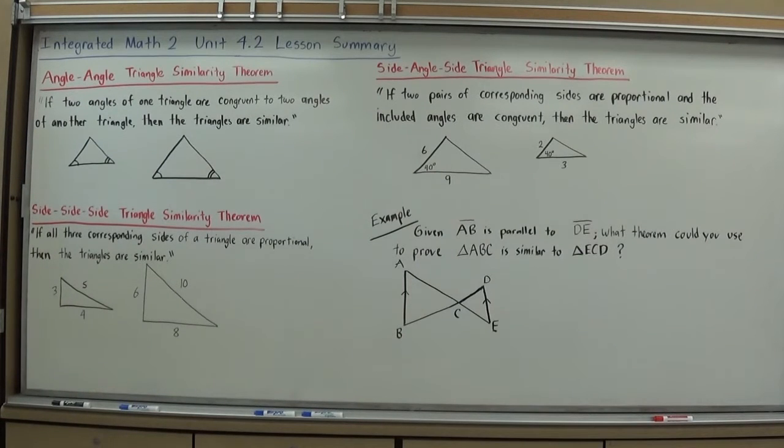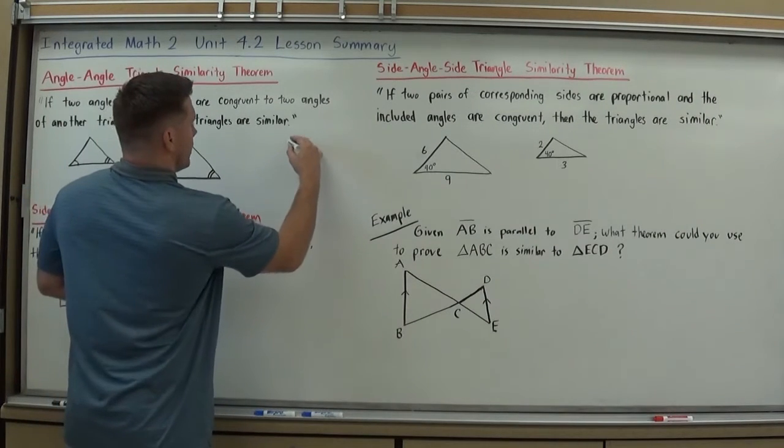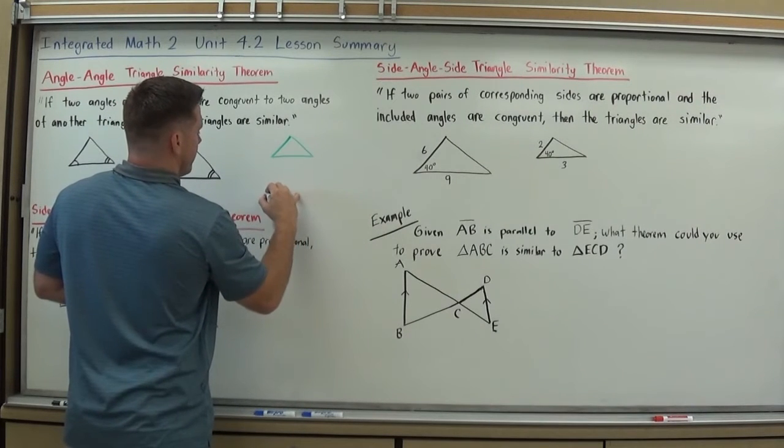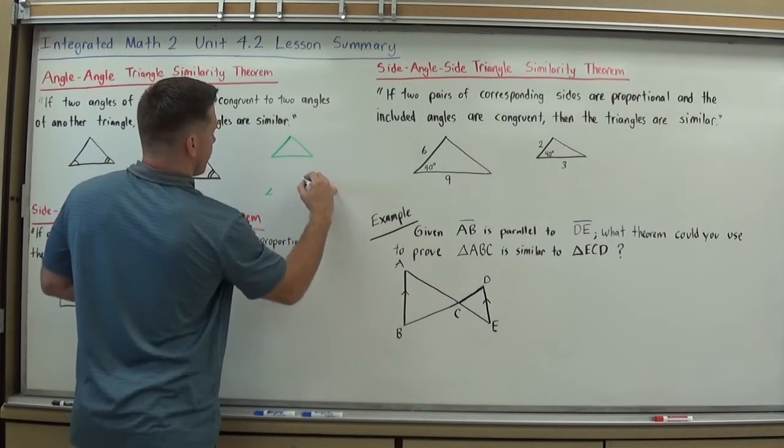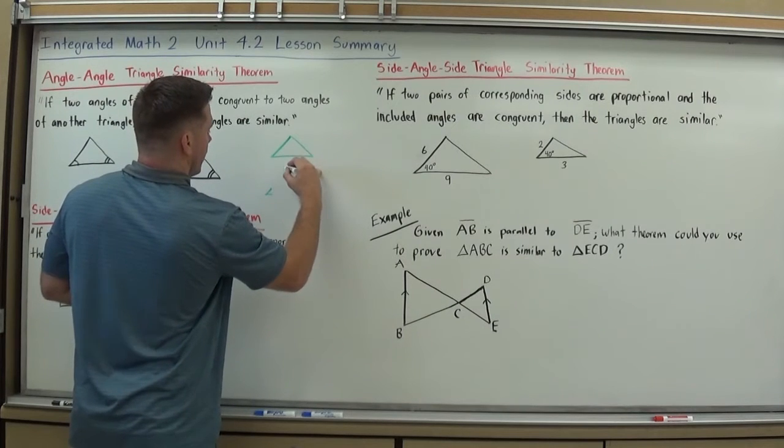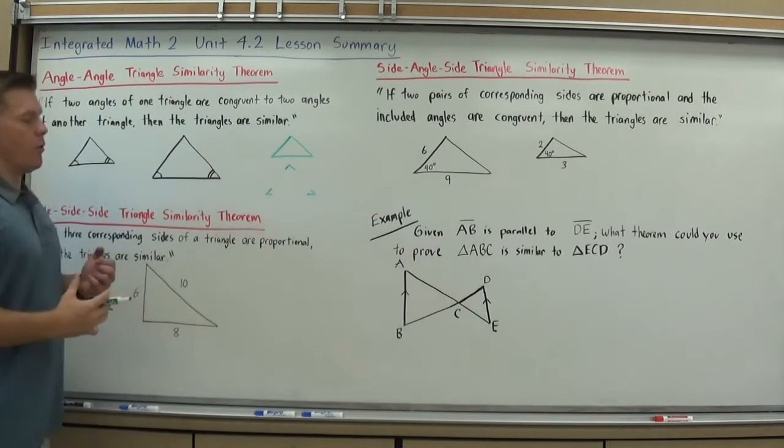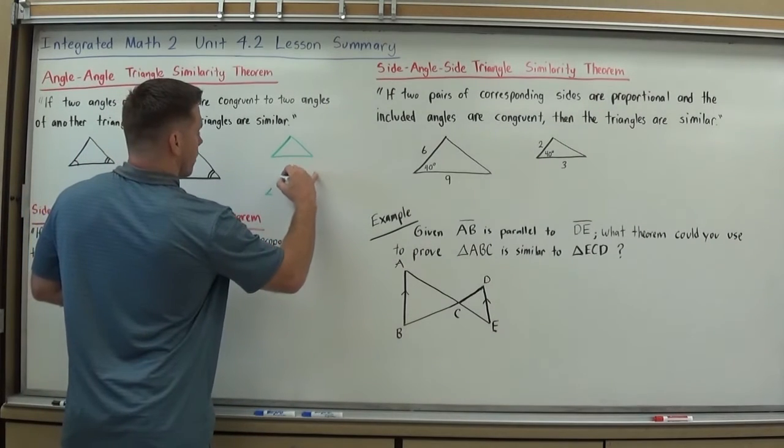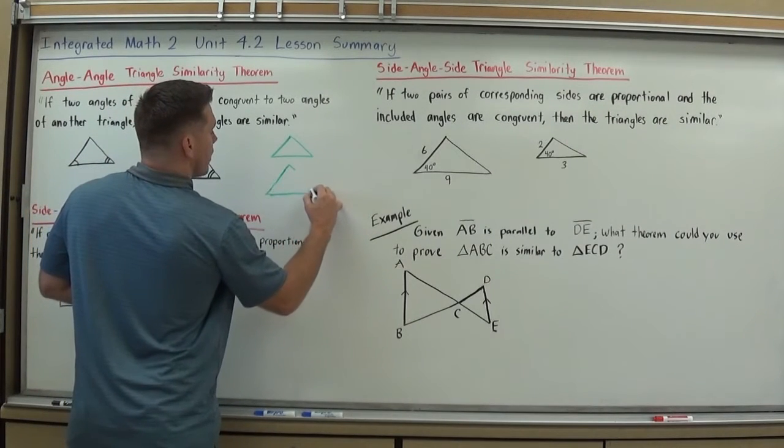So the first one is the angle-angle triangle similarity theorem. It states that if two angles of one triangle are congruent to two angles of another, then the triangles are similar. And the reason for that is if you take any sort of triangle and you make the exact same three angles, no matter how you extend this out now, you're going to have the same triangle.